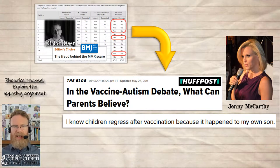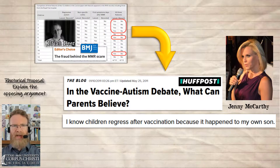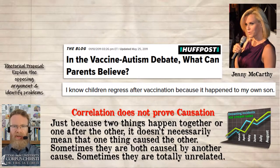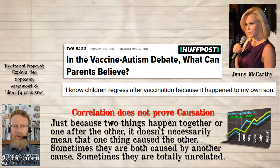In the prior case study, we read Jenny McCarthy's blog post titled 'In the Vaccine Autism Debate, What Can Parents Believe?' In this blog post, McCarthy gives her core argument when she says that she knows children regress after vaccination because it happened to her own son. One thing happened first, then the other thing happened, therefore the first thing must have caused the second. Even if it happened in that sequence, that's still correlation — it doesn't prove causation.